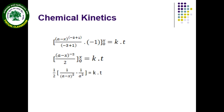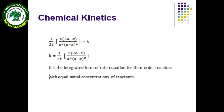Common examples for third-order reaction kinetics include: the reaction between nitric oxide and oxygen giving 2NO₂; 2NO plus Cl₂ giving 2NOCl; 2NO plus Br₂; the reaction between ferric chloride and stannous chloride, which also follows third-order kinetics; and the oxidation of ferrous sulfate in water, which also proceeds with third-order kinetics.